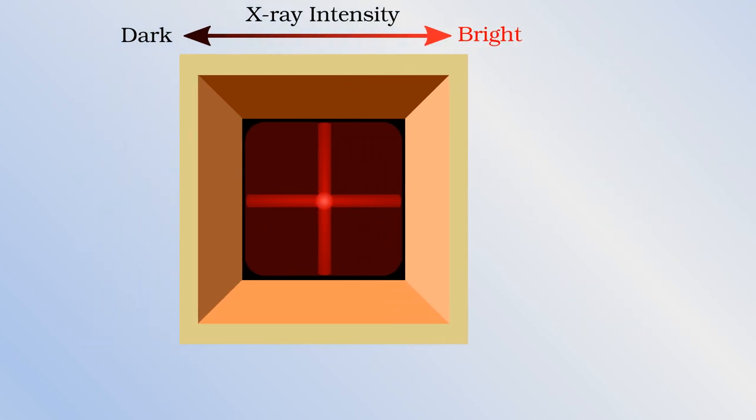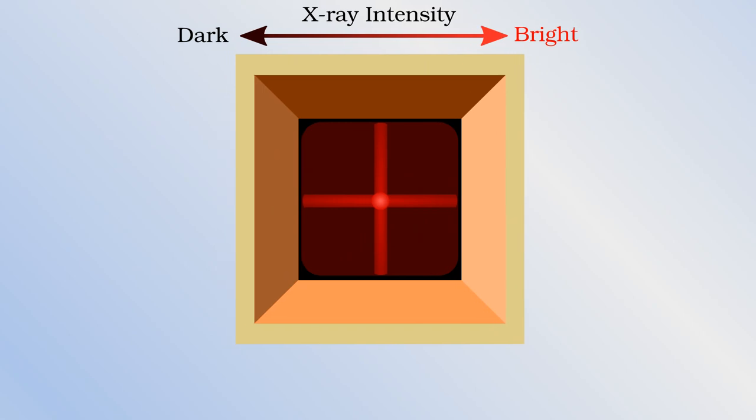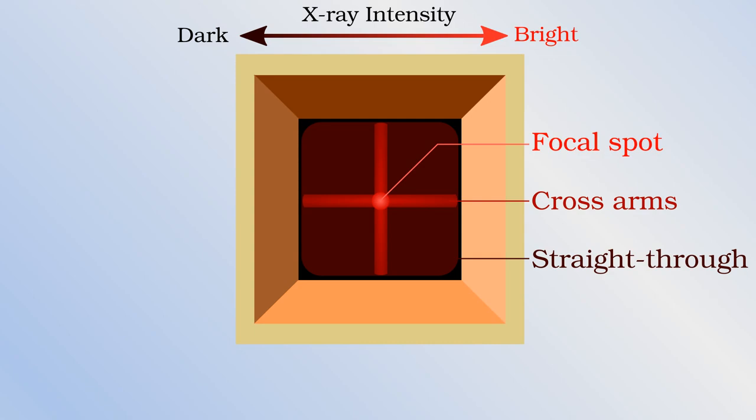Overall, then, the lobster eye focuses light from a single point to a focal spot, as any good optic must do. In addition to the central spot, a cross-shaped feature is also produced. This is not ideal, but as we will see later, this will produce high-quality images of scientific phenomena.